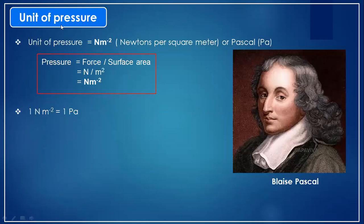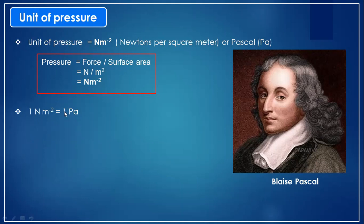The unit of pressure is Newton per square meter, or we can write it as Pascal. To derive this SI unit, write the equation: pressure equals force divided by surface area. The SI unit of force is Newton and surface area is square meters. Dividing Newton by square meters gives Newton per square meter. One Newton per square meter equals one Pascal. You can use both units for pressure.